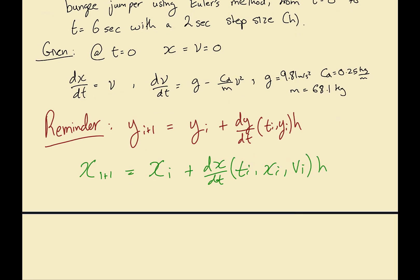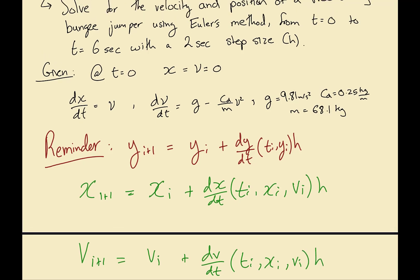For velocity: vi+1 = vi + (dv/dt) evaluated at (ti, xi, vi) times h. As we get new results, whatever values we calculate can be used as inputs in the next step.